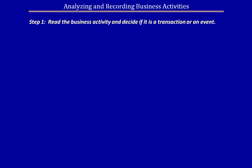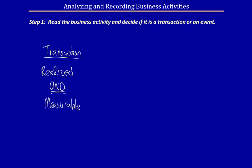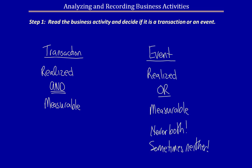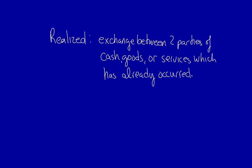What's the difference? A transaction is a business activity that is realized and measurable. An event is a business activity that is either realized or measurable, but never both — and sometimes neither. What does realized mean? Generally, realized means that there has been an exchange between two parties which resulted in the transfer of goods, services, or cash — this has already occurred. There are exceptions: realized might also mean an internally owned asset that has been used or consumed, in which case there is no other party to the transaction.